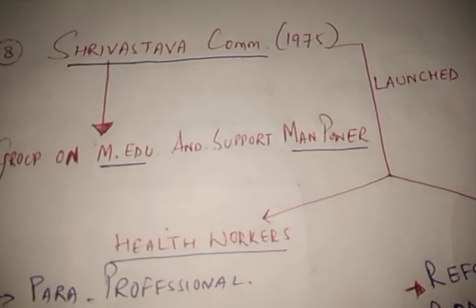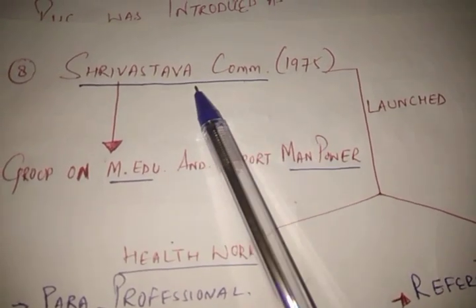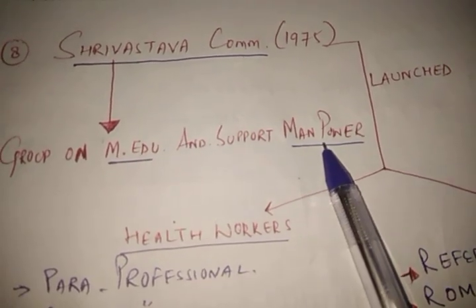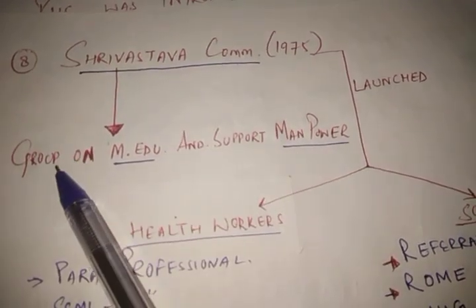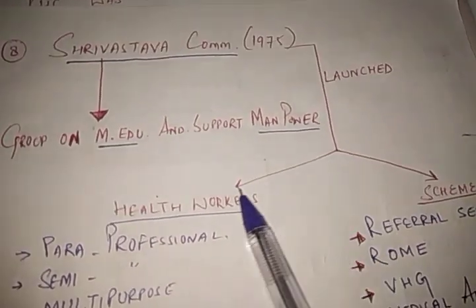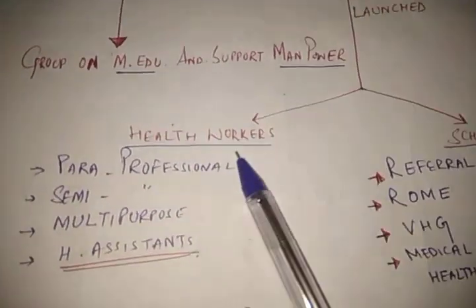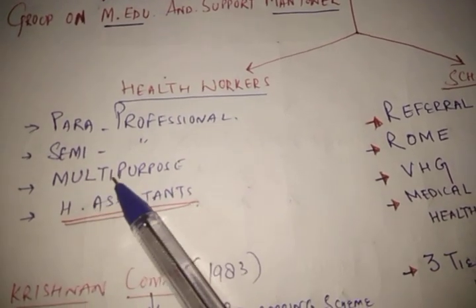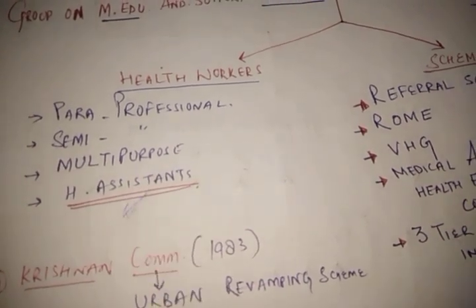After the Kartar Singh Committee, which did the function of replacement of workers, came the Srivastava Committee. This committee is also called the Group on Medical Education and Support Manpower, and it came in 1975. The Srivastava Committee launched certain schemes and health workers — the health workers being paraprofessional, semi-professional, multi-purpose health workers, and health assistants. The concept of health assistant was given by the Srivastava Committee.